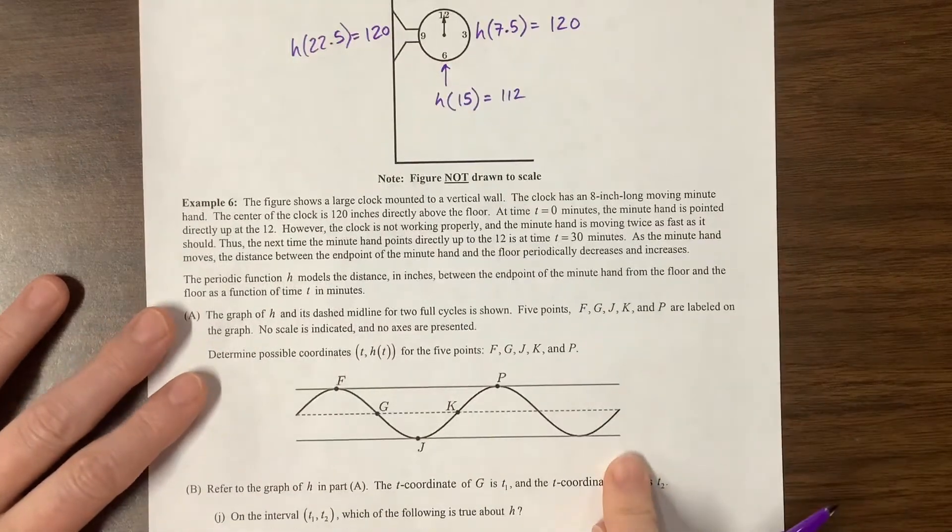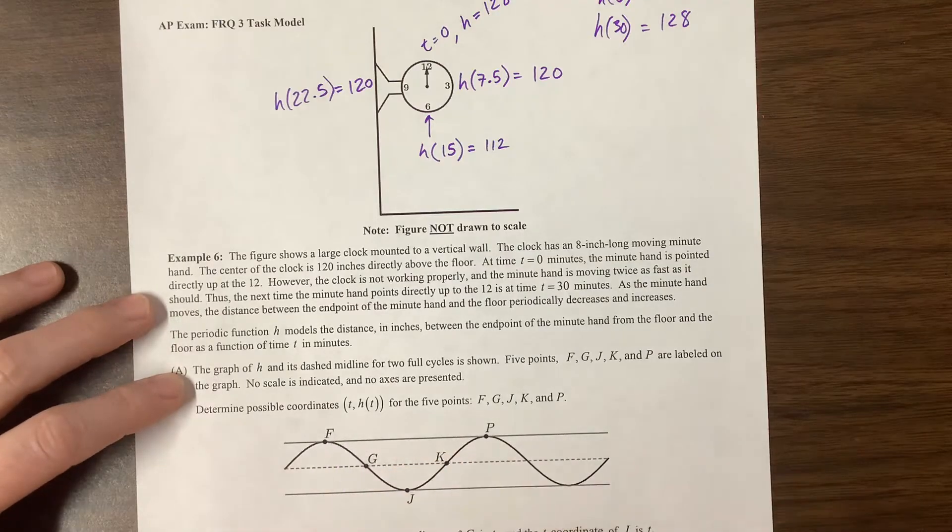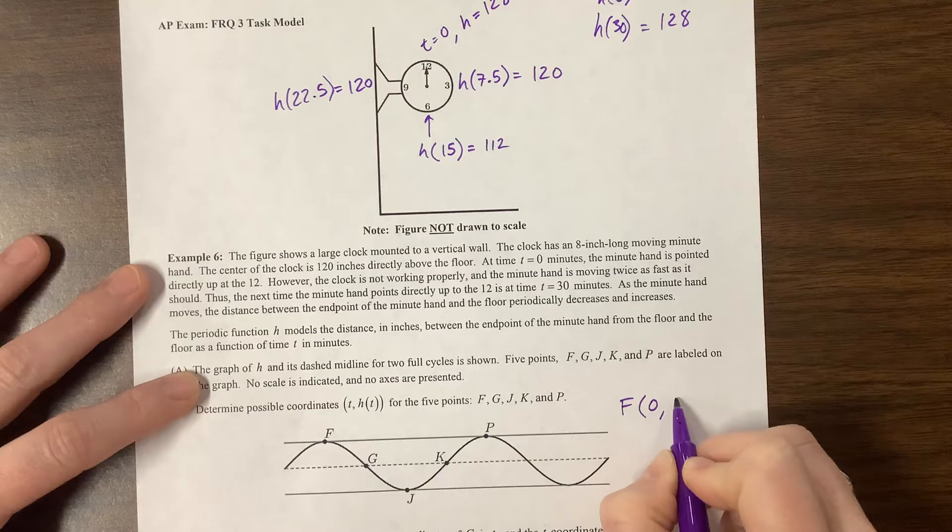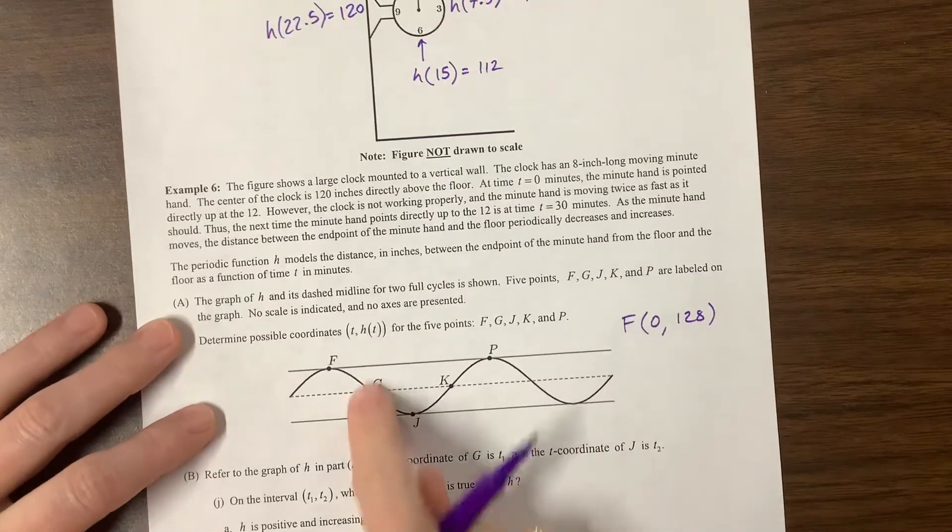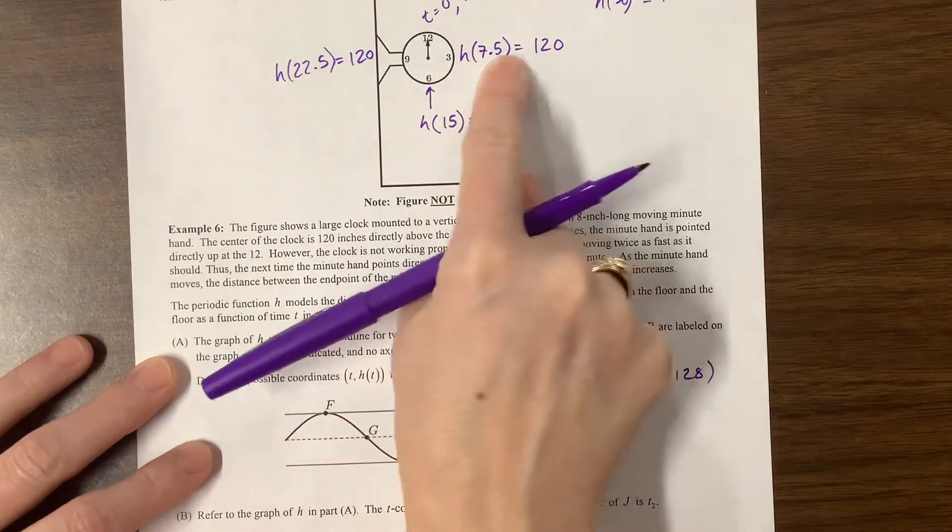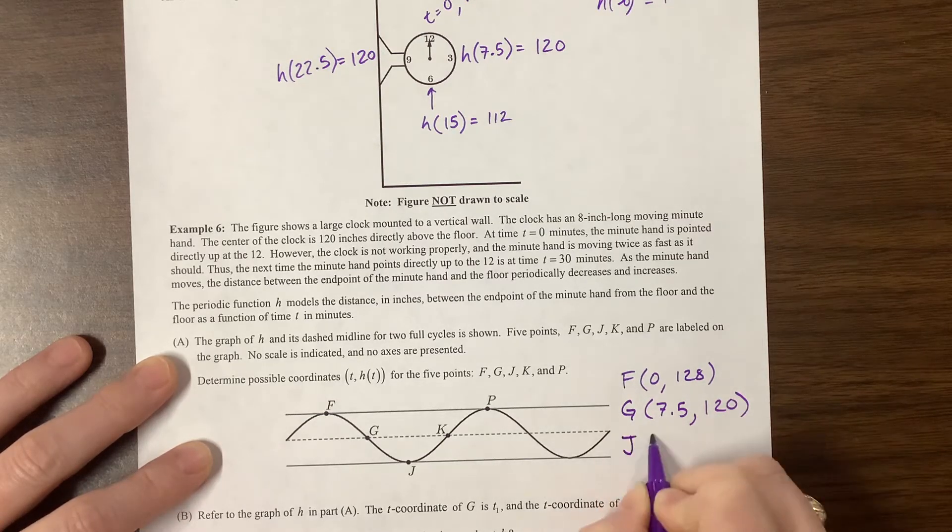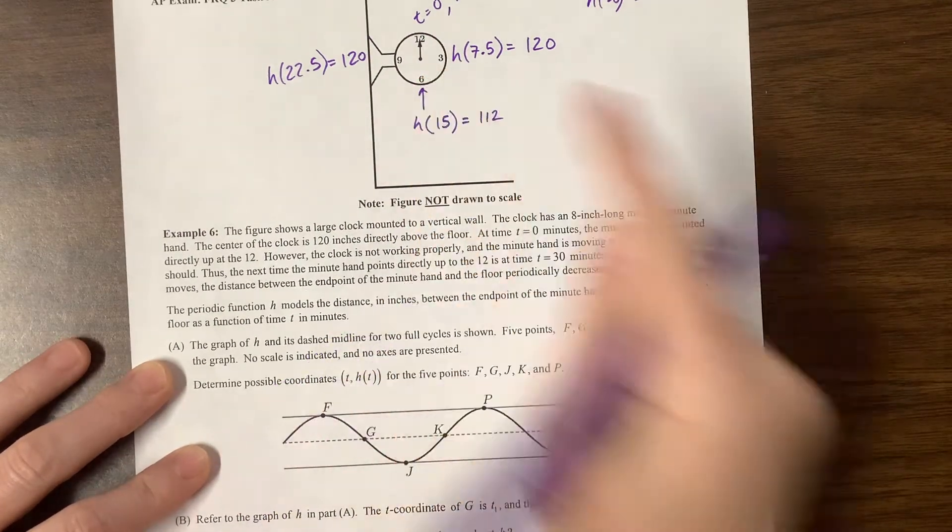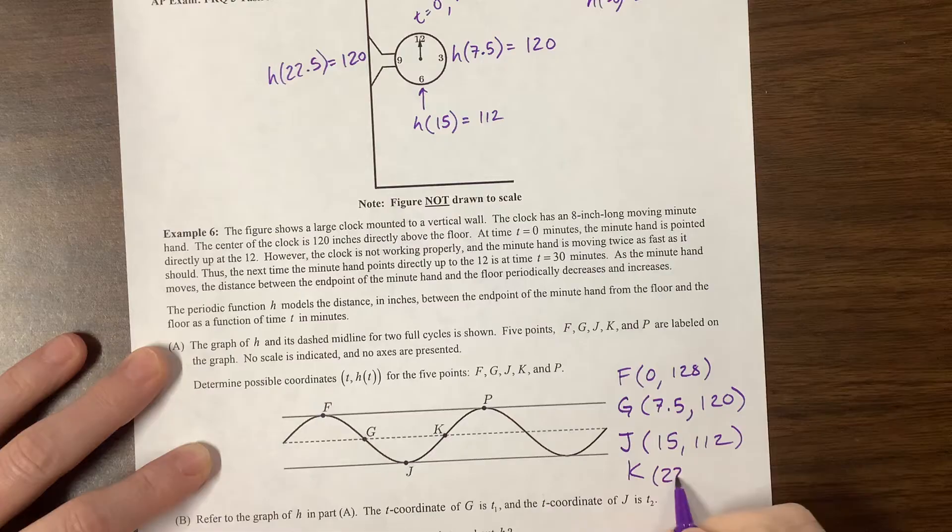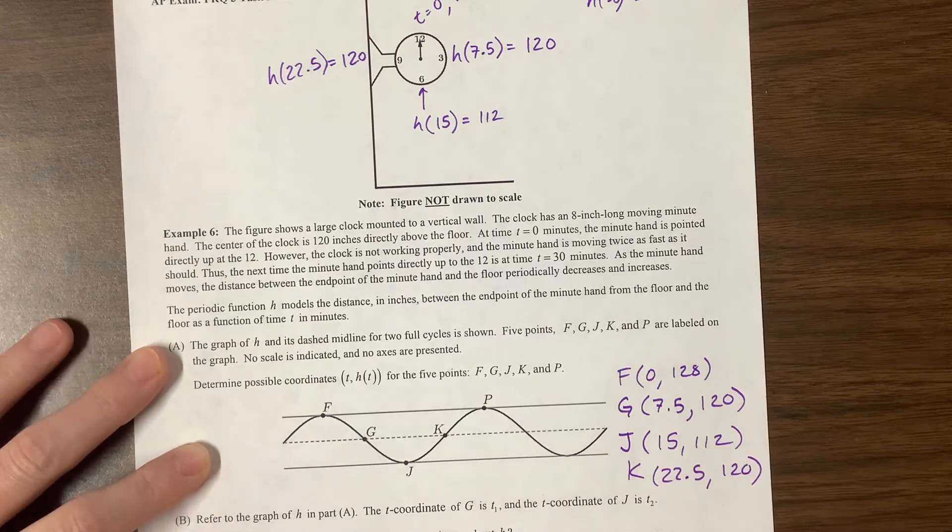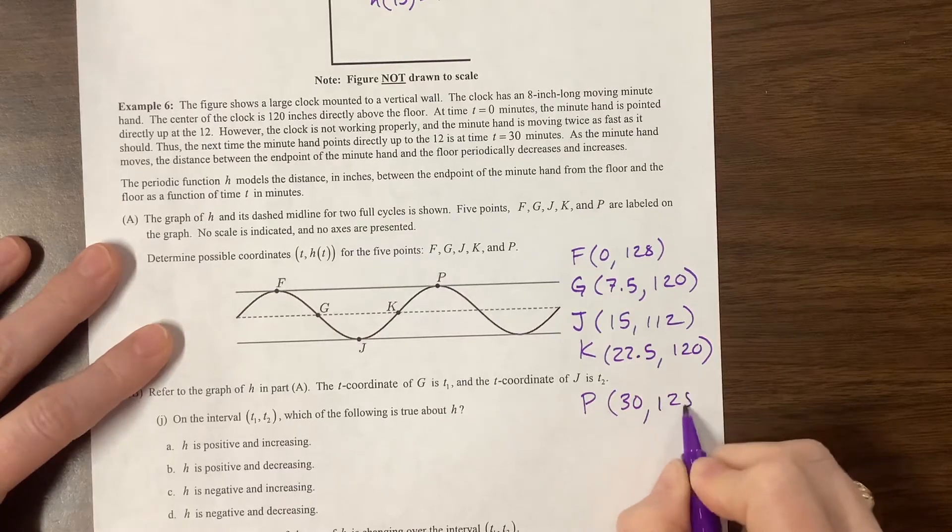So now we need to take this information and come down and put it on this graph. I would say that F is the point 0, 128, which came from here. And then G is when we get to this midline here, so this would be G the point 7.5 comma 120. J happens at the very bottom here, so J at the bottom is the point 15 comma 112. K is when we get back to that midline, which was at 22 and a half minutes. And then the last one, P, we get back up to the top at 30 minutes into this whole activity and we are 128 inches off the ground.